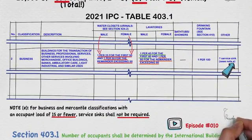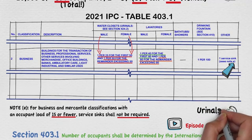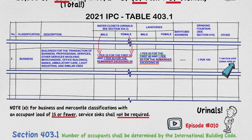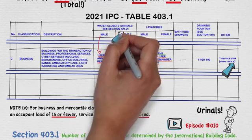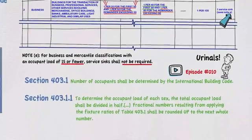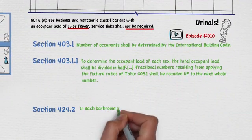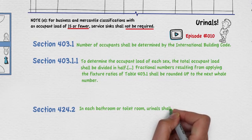Now we're almost done, but if you look at the chart there are no other fixtures to calculate — so what is missing? If you said we are missing urinals, you are correct. The International Plumbing Code does not have a separate section for urinals. The chart has a note in the water closet section referring to section 424.2, which states: urinals shall not be substituted for more than 67% of the required water closets in assembly and educational occupancies, and not more than 50% in all other occupancies. Since our occupancy is not assembly or educational, we can substitute up to 50% of the water closets for urinals. Since we need 3 water closets, we can substitute 1 water closet for a urinal.